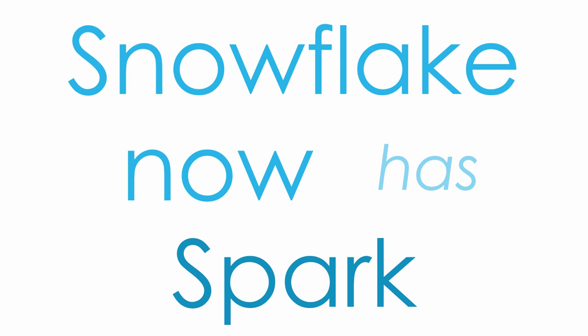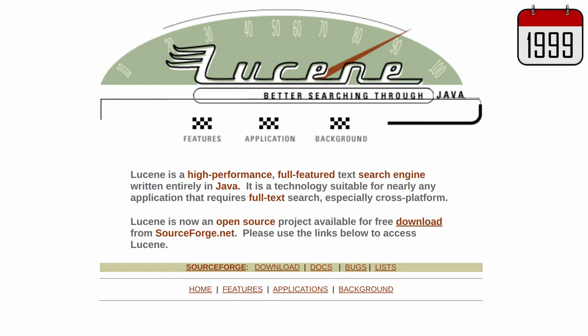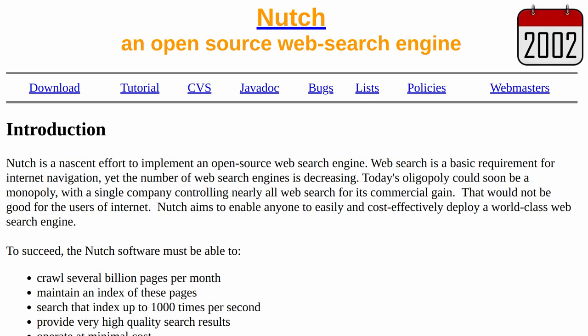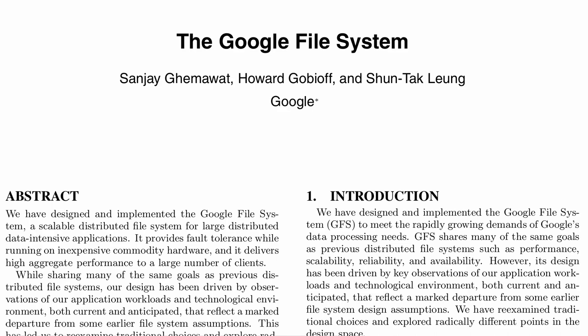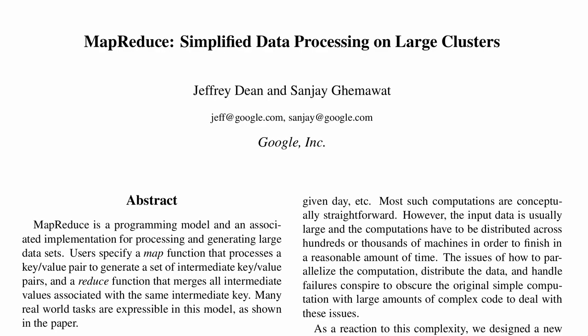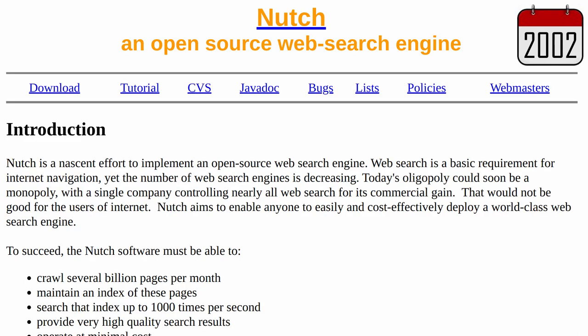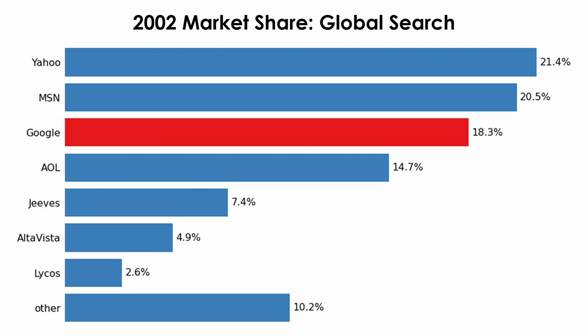Let's go through a quick history lesson. First, an open source search indexer was built named Lucene. Then a web crawler named Nutch was created so that the two open source projects could be used together to create a search engine. Google published white papers about its distributed file system and its MapReduce programming model, which the Nutch developers cloned in Java to enable their system to search across billions of web pages.